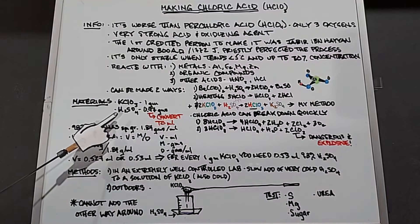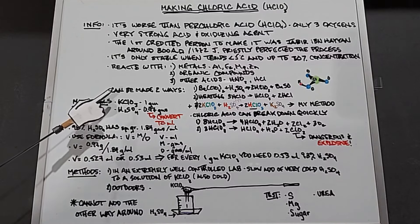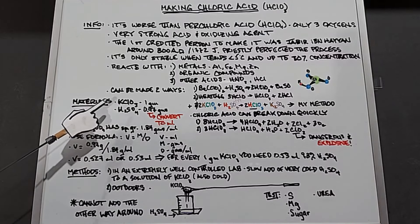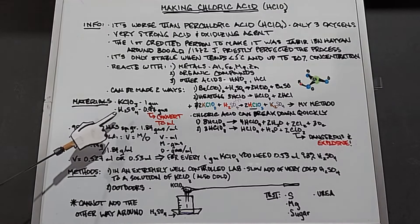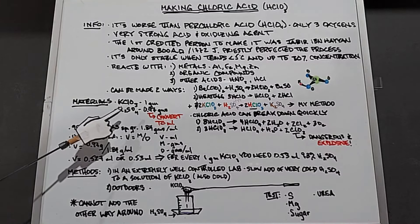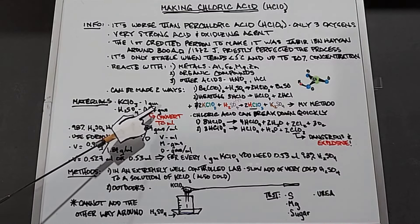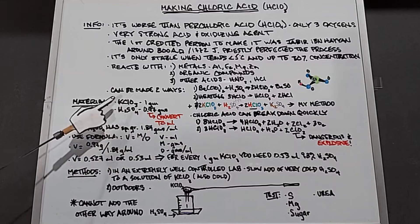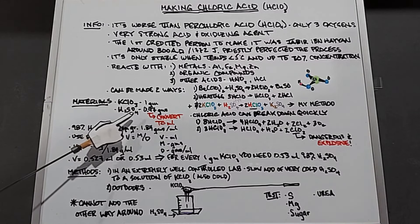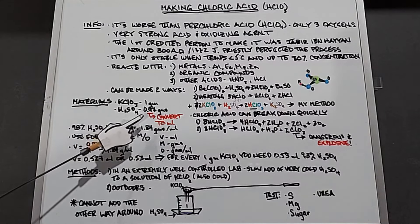The materials we need are potassium chlorate and sulfuric acid. This is 98% sulfuric acid. For every one gram of potassium chlorate solid, we need 0.97 grams of 98% sulfuric acid. I wanted to convert this to milliliters because it's much easier.